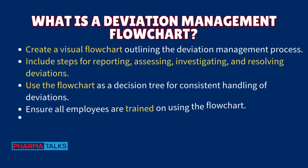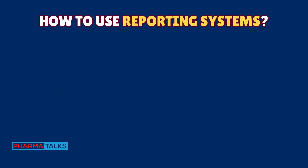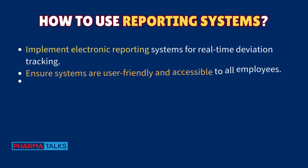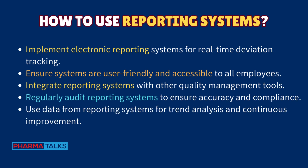A deviation management flowchart provides a visual outline of the deviation management process. Include steps for reporting, assessing, investigating, and resolving deviations. Use the flowchart as a decision tree for consistent handling of deviations. Ensure all employees are trained on using the flowchart and update it as needed to reflect process improvements.